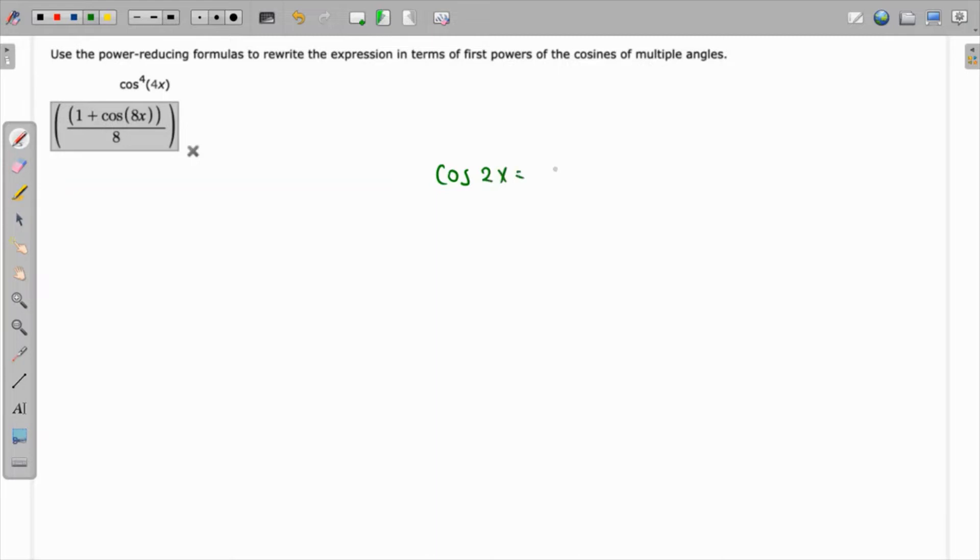The double angle identity says that cos 2x = 2cos²x - 1. If we add one to both sides, we have 1 + cos 2x = 2cos²x. Dividing both sides by 2, we get (1 + cos 2x)/2 = cos²x.